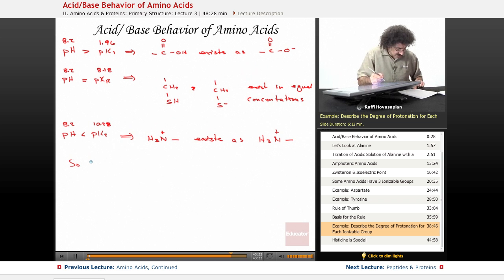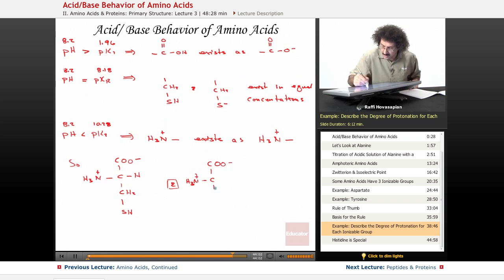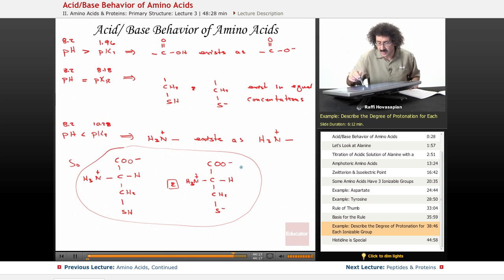So, our final answer. We have C, COO minus, H, N, H3 plus, CH2 and SH. And C, COO minus, NH3 plus, CH2, S minus, H. So this is our final answer. The amino acid actually exists as an equal concentration of this thing and this thing.